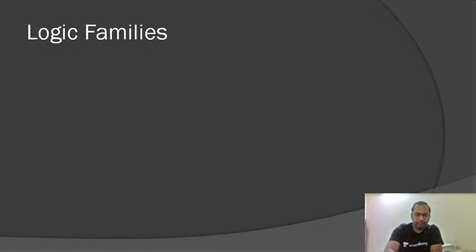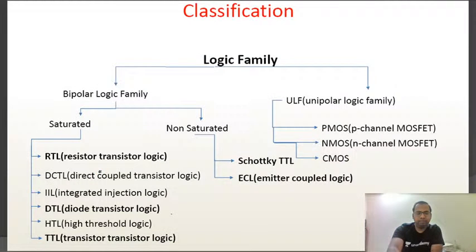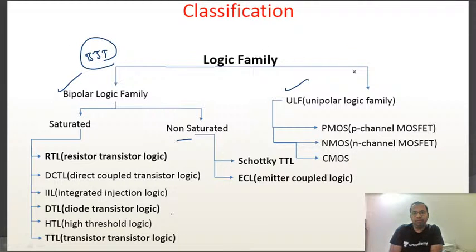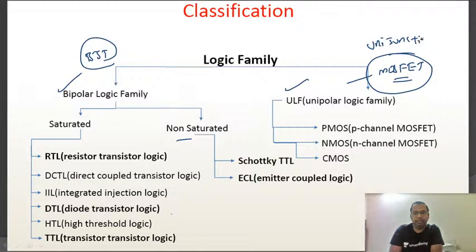Now coming to the present content: logic families. We have a few different types of logic families. The first is the bipolar logic family and the second is the unipolar logic family. Bipolar logic families are designed with BJTs, and unipolar logic families are designed with MOSFETs. MOSFETs have a uni-junction, while bipolars have a bi-junction — meaning two junctions.